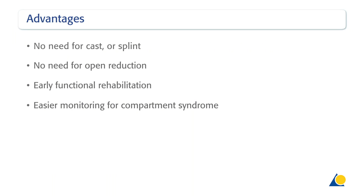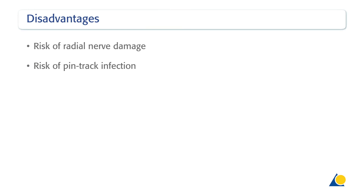The advantages are: There is no need for casting or splinting. There is no need for open reduction. Early functional rehabilitation is possible. And it allows easier monitoring for compartment syndrome. The disadvantages of the technique are: There is a risk of radial nerve damage if the proximal shunt's screw is inserted too proximally. And a risk of pin-track infection.